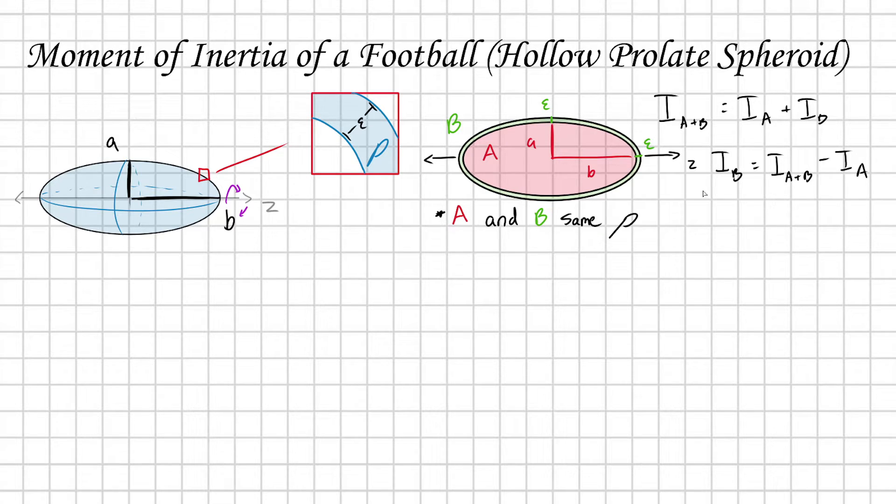What's really nice is that the moment of inertia of solid spheroids are fairly simple. For a prolate spheroid in terms of mass density, I equals 8/15 times π times ρ times A^4 times B, where capital A is the minor axis of your spheroid and capital B is your major axis.